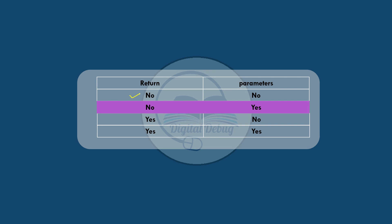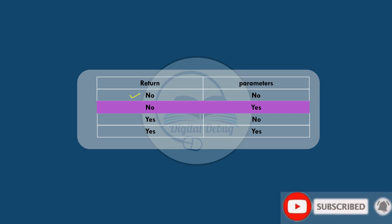That is, if you consider the boss and employee example again — now the boss will give the employee some files or data to work on. But after that, the employee will perform the entire task and keep the file with themselves. The employee will not return any updated file back to the boss. So we will pass parameters to the function, which it will work on, and then perform all the work inside its own body.